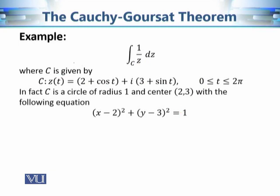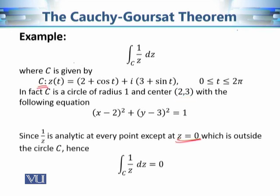C is a circle of radius 1 and center (2, 3), because of the translation: 2 along the x-axis and 3 along the y-axis. The equation of this circle is (x−2)² + (y−3)² = 1. The function 1 over z is analytic at every point in the complex plane apart from z = 0, but this point is outside circle c. Hence, this contour integral is 0.